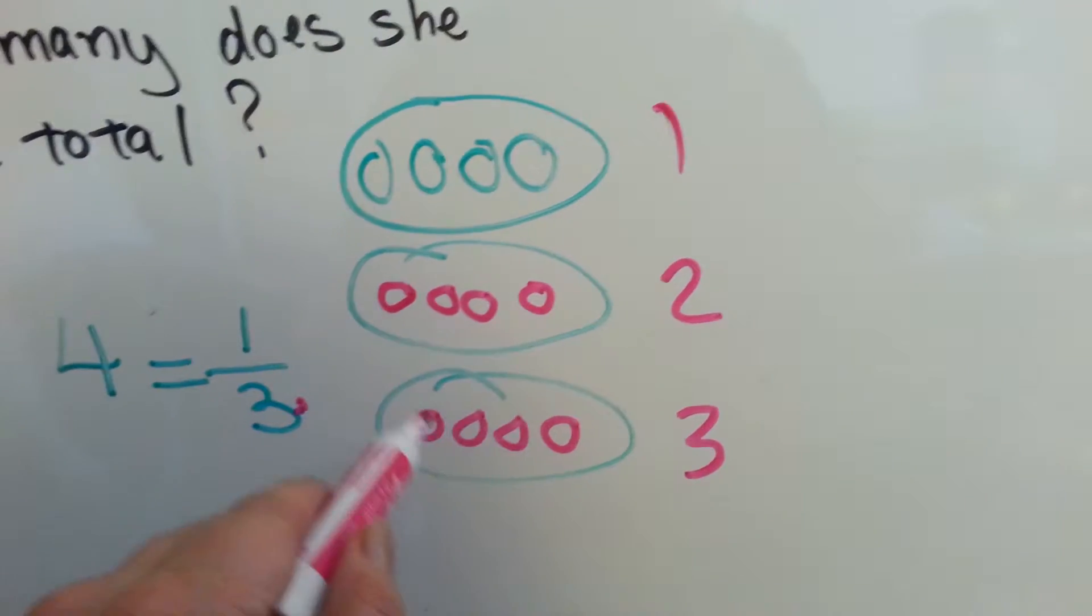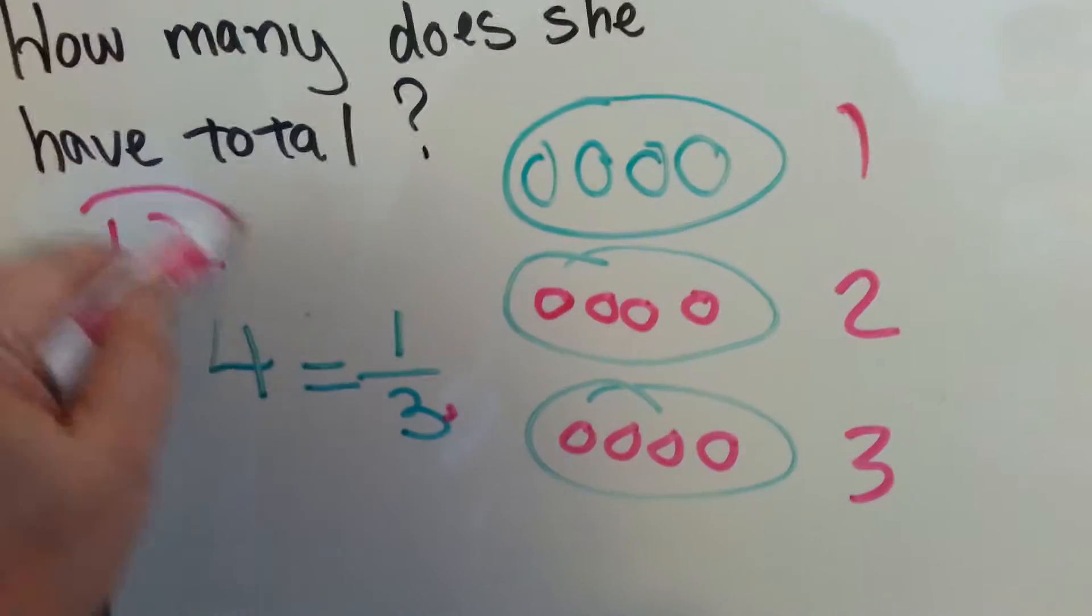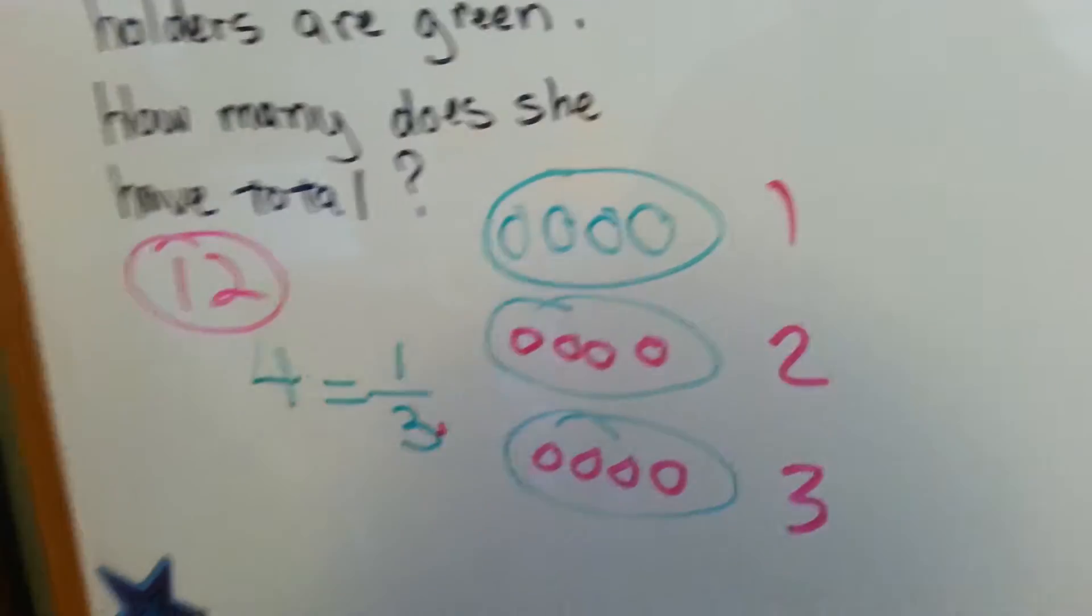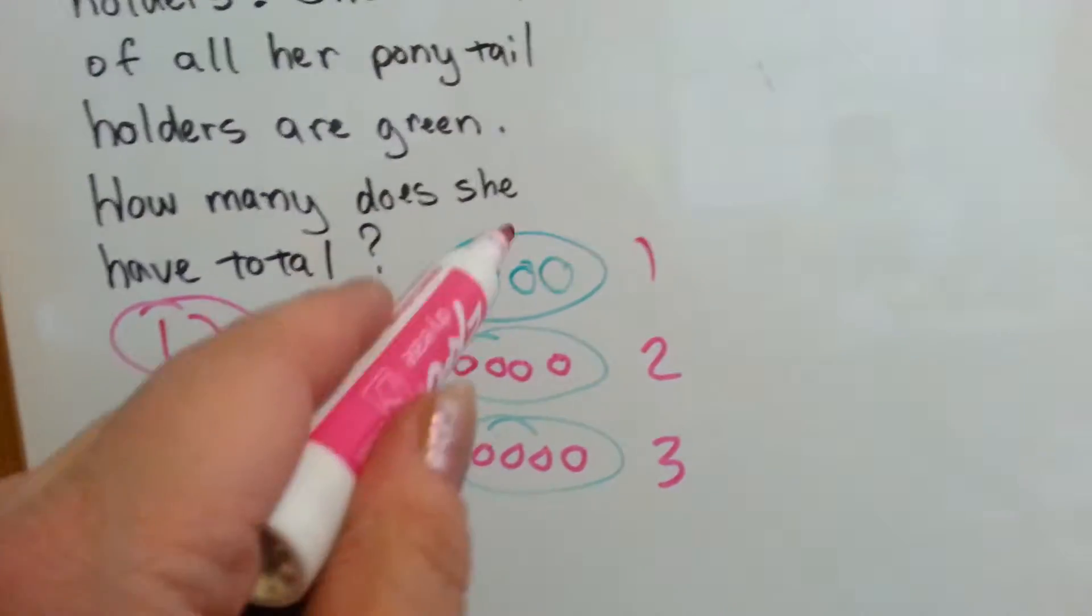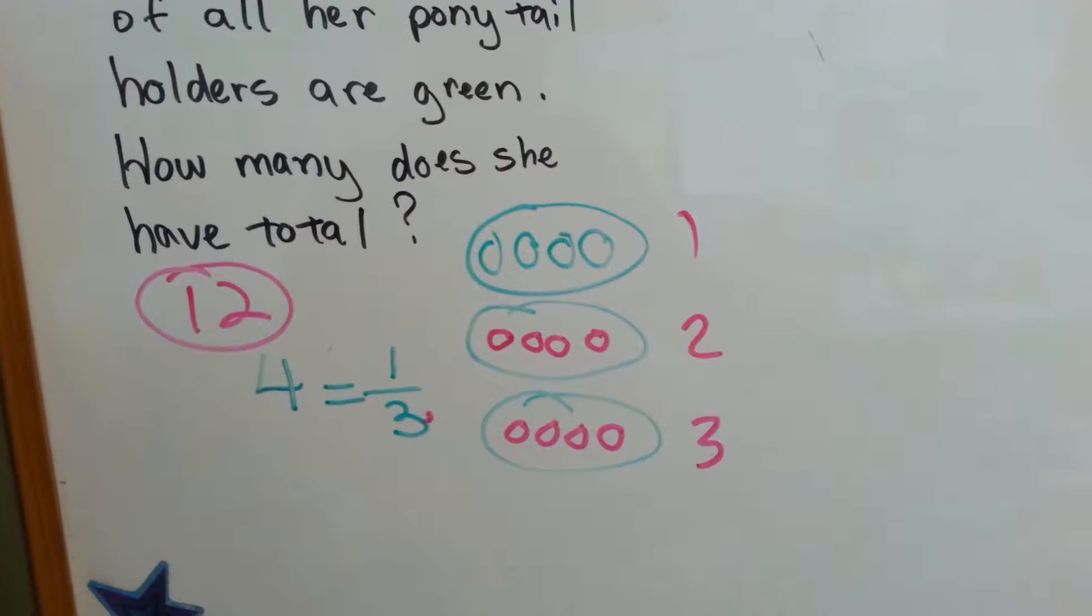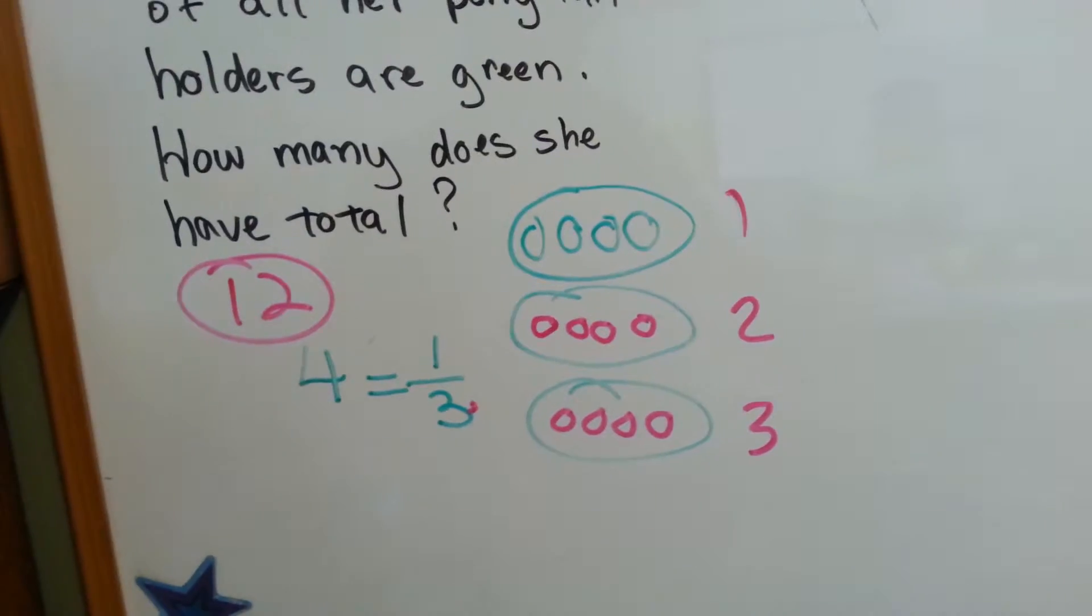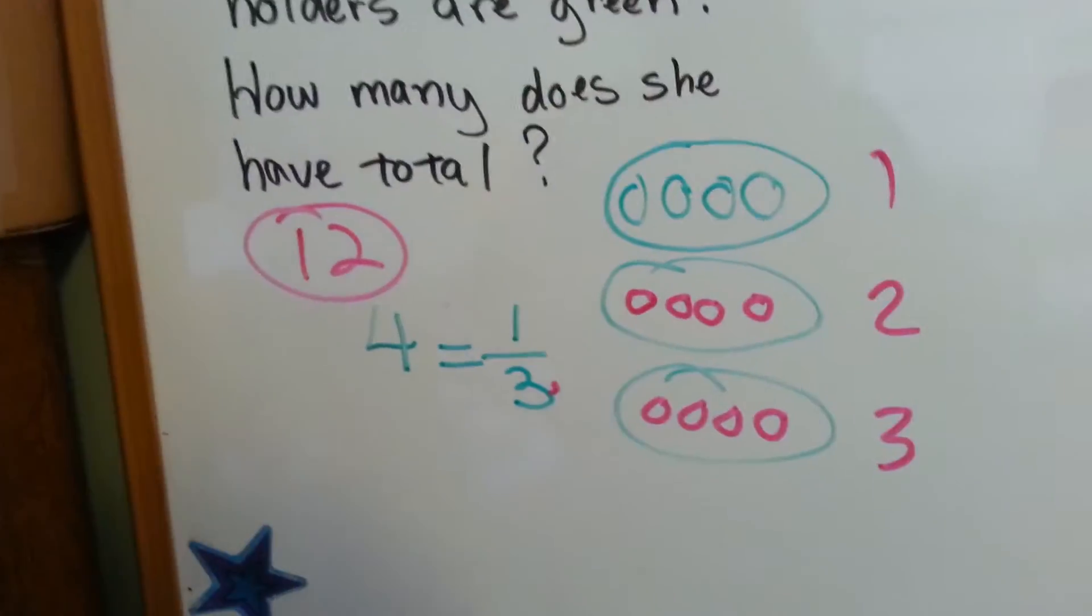Four, five, six, seven, eight, nine, ten, eleven, twelve. She's got twelve. She's got twelve ponytail holders. A third of them are green, so that means one group out of three is green, and there's four in the group. Now, there's another way to do this.